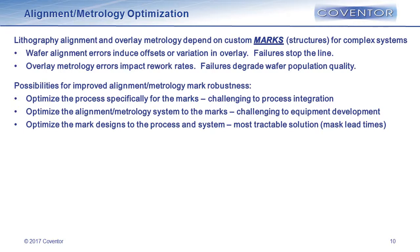Another example: lithography alignment. When wafers come into the lithography tool, they have to be aligned using custom marks or structures on the wafer. Alignment errors induce offsets and overlay variation, and failures to align actually stop the fabrication line. In technologies early in manufacturing, wafers failing to align is a massive throughput problem. You can optimize the fabrication process specifically for alignment marks — but your process integration team gets very angry with you. You can optimize the alignment metrology system for whatever marks are coming, but that requires tool and equipment changes.